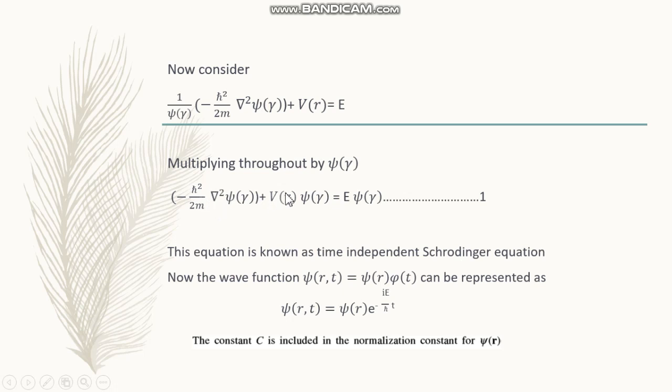Here we can identify this minus h-bar squared by 2m del square plus V as the total energy operator called the Hamiltonian operator, which is completely independent of time. This is the energy operator.